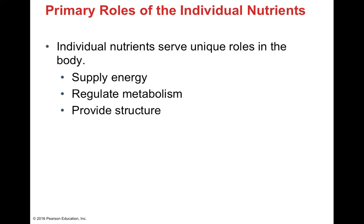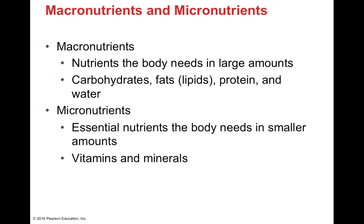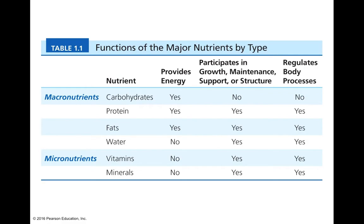We have specialized nutrients with particular roles inside the body — some supply energy, some provide structure, and some regulate your metabolism. Macronutrients are nutrients the body needs in large amounts: carbohydrates, fats, proteins, and water. Micronutrients — vitamins and minerals — are needed in small amounts. Although we do need them, high levels can be toxic, so we want very small amounts. As part of this class, each student will make a 15-minute PowerPoint presentation on a specific vitamin or mineral, presented via Zoom.